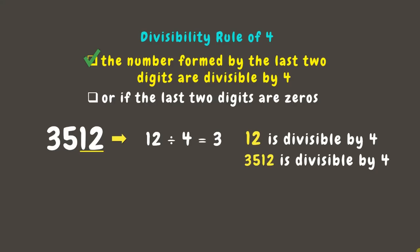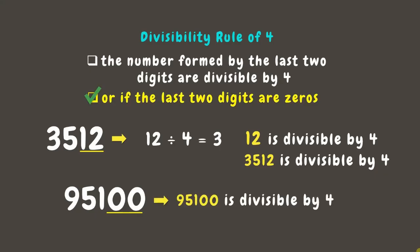Another quick strategy is to look at the last two digits. If the number they form is a multiple of 4, you can conclude that the entire number is divisible by 4. Let's use another as an example: 95,100. The last two digits are zeros, which means that 95,100 is divisible by 4.